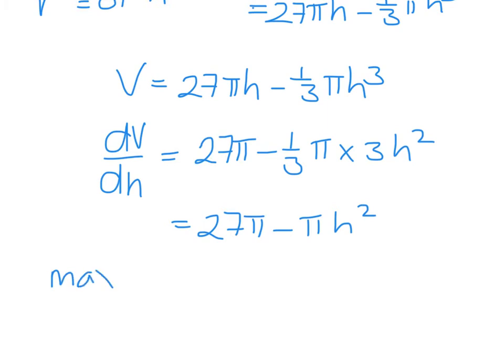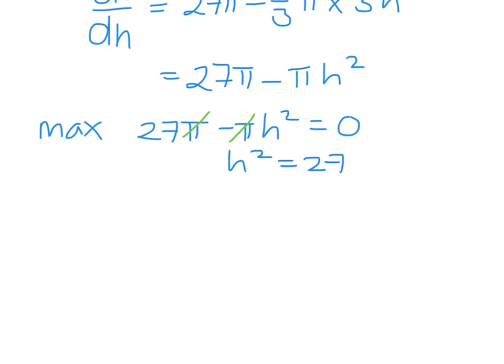Maximum occurs when dv by dh equals 0. Pi is a common factor, so I can eliminate it. So it's when h squared equals 27. So h would equal plus or minus the square root of 27.